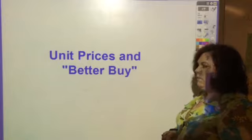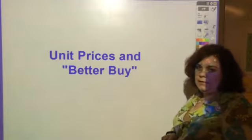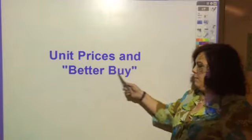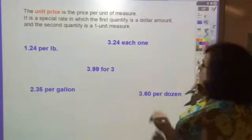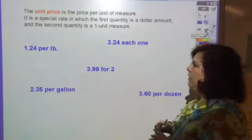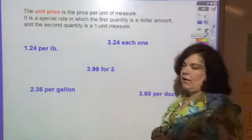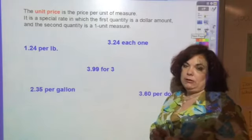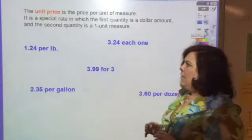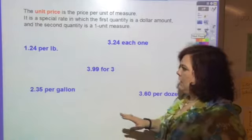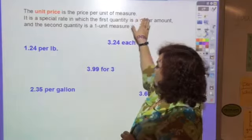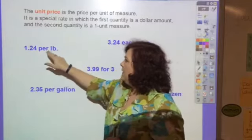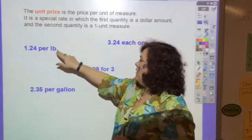This video is on finding unit prices in order to find the better buy. A unit price is a price per unit of measure. What you want to do is get the lowest unit price. It is a special rate in which the first quantity is a dollar amount and the second one is a one-unit measure.